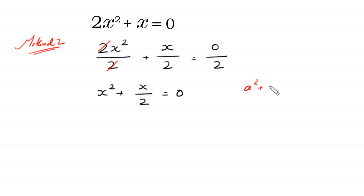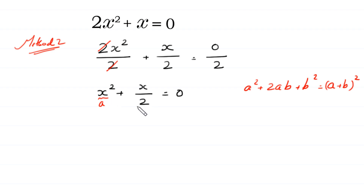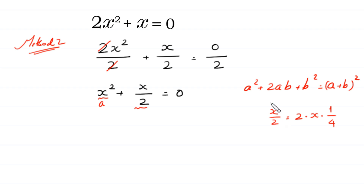According to the algebraic identity: a squared plus 2ab plus b squared equals a plus b whole squared. In this equation, x is as a, and we split x over 2 as 2 times x times 1 over 4. This 2 times x times 1 over 4 is the same as x over 2, so here 2ab gives us a as x and b as 1 over 4.